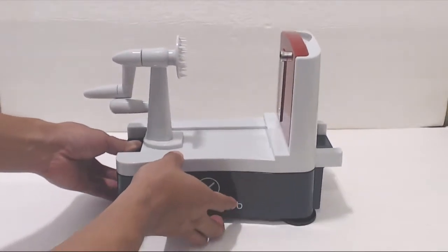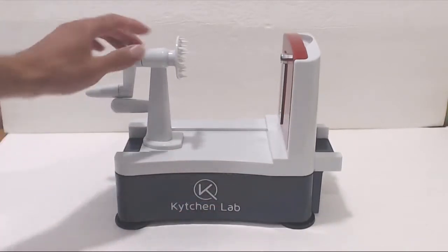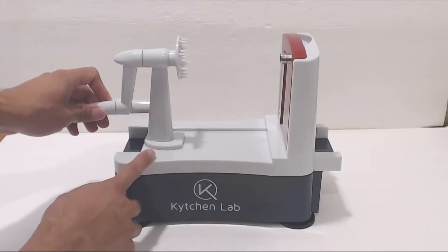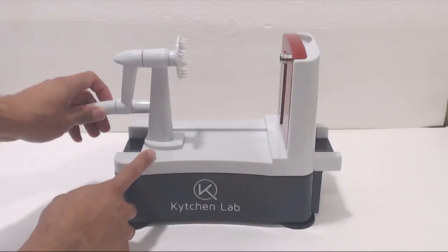While the unit didn't come with any directions, it was pretty easy to figure out. The rotary handle has a spiked plate in front of it where you'll seat your hard produce, like a potato, carrot, zucchini, or apple.